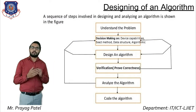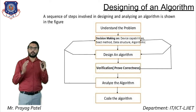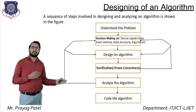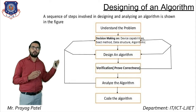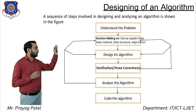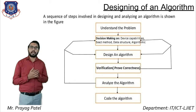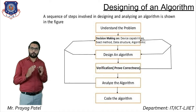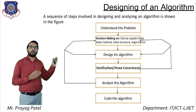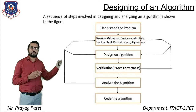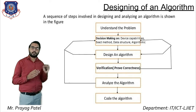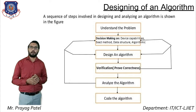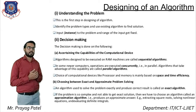Now consider the designing of an algorithm. The sequence of steps involved in designing and analysis of an algorithm are: first, understand the problem; second, decision making on device, exact or approximate method, data structure, and algorithmic strategy; third, design the algorithm; fourth, verification of algorithm; fifth, analyze the algorithm; and last, code the algorithm.